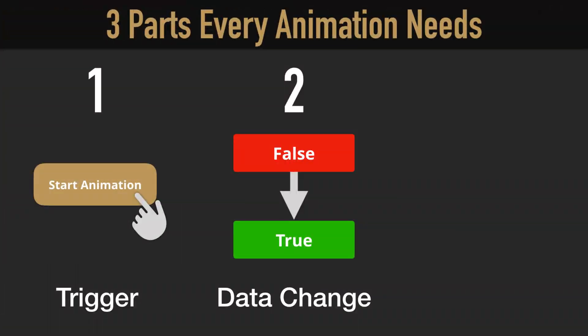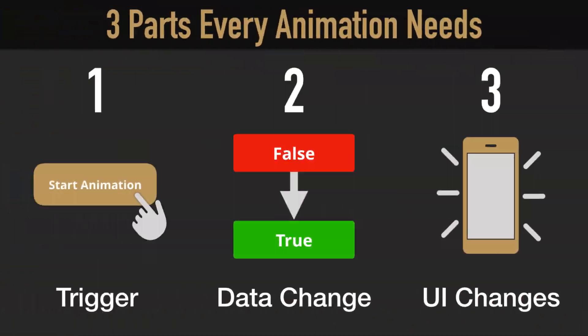The second thing that has to happen is there has to be some kind of change of data, because your views are going to be listening or responding to a change of data. This comes in the form of a state variable. There has to be some data that gets changed. The third part you need for every animation is some kind of UI change. You can add an animation modifier to a view, but it's not going to do anything unless there's some kind of change happening to that view.